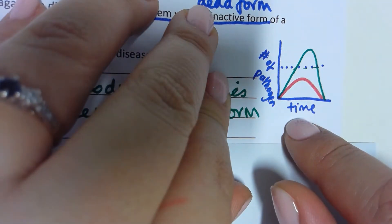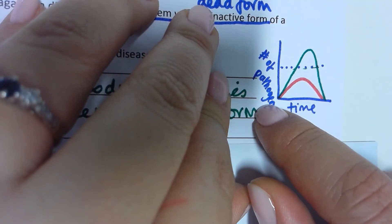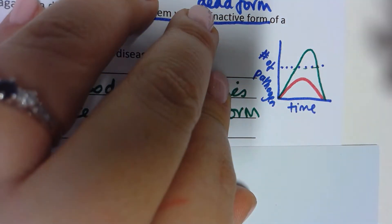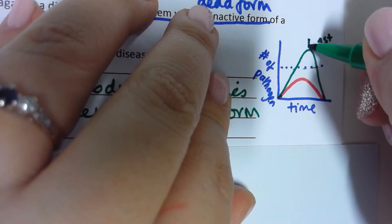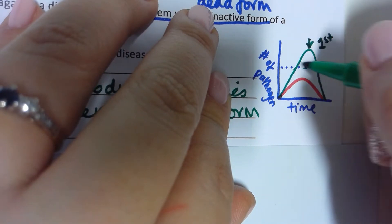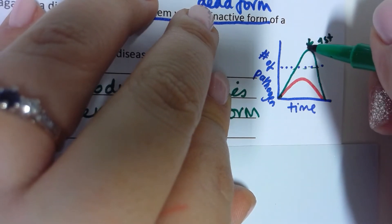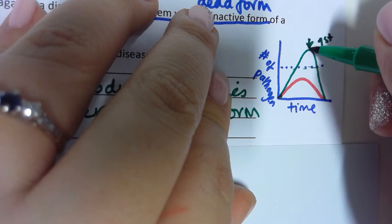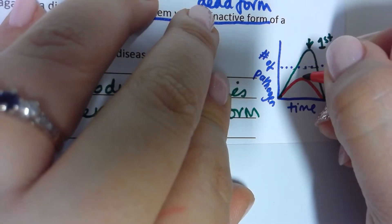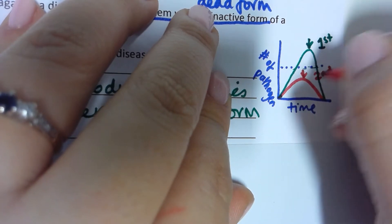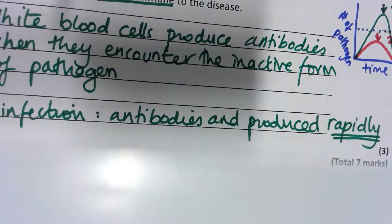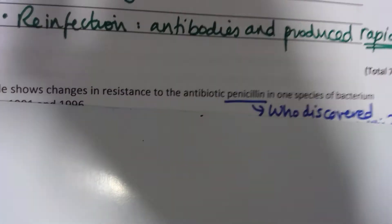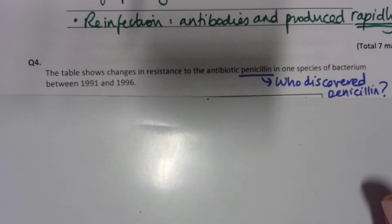Looking at the graph: time is on the x-axis and number of pathogens on the y-axis. The first time a person encounters the pathogen, it only passes the symptom threshold at a certain point, where white blood cells are making antibodies to kill it. However, the second time it doesn't pass the symptom threshold because the white blood cells produce antibodies really rapidly much earlier.